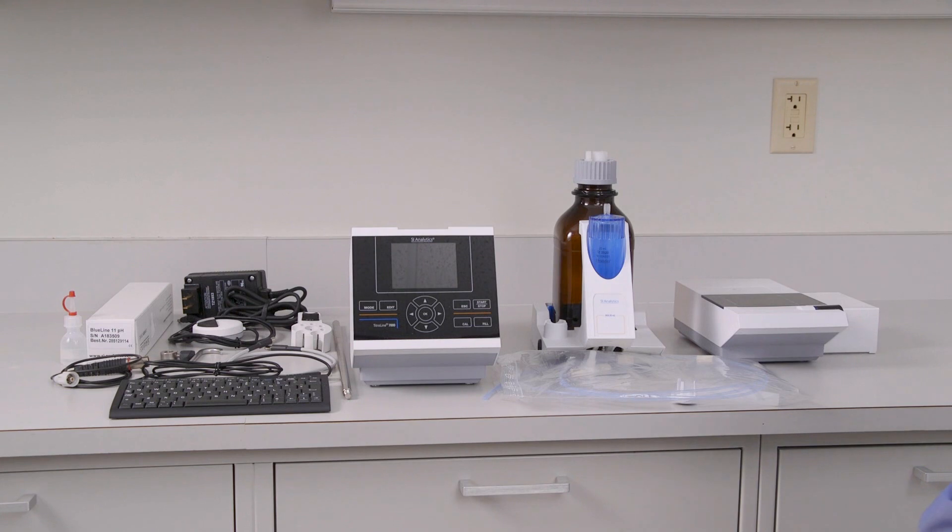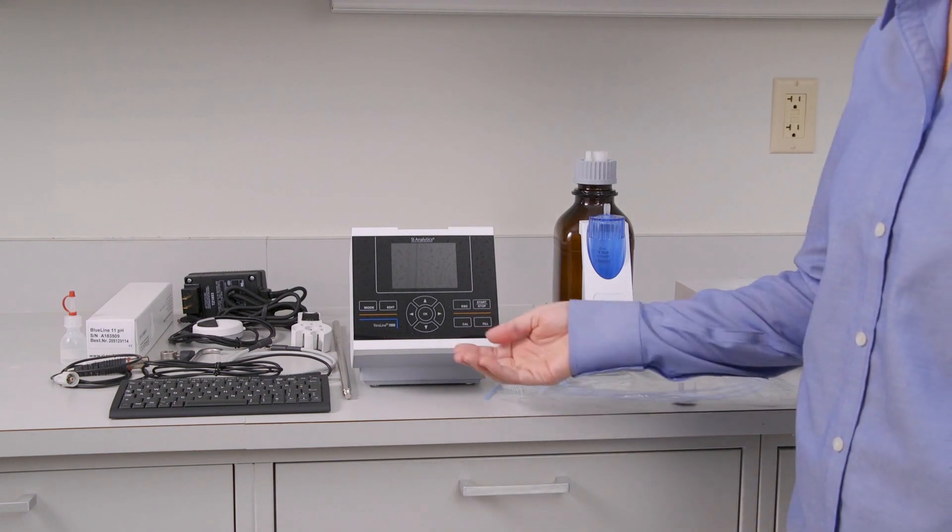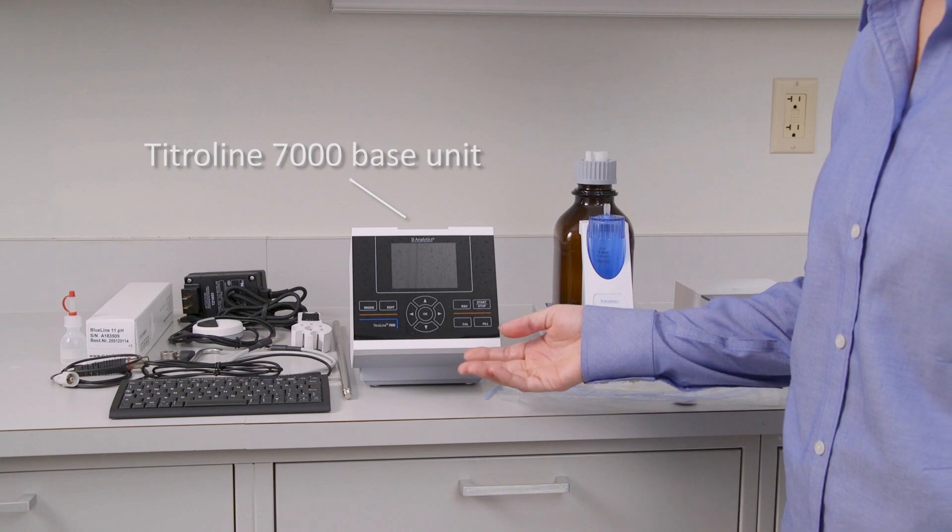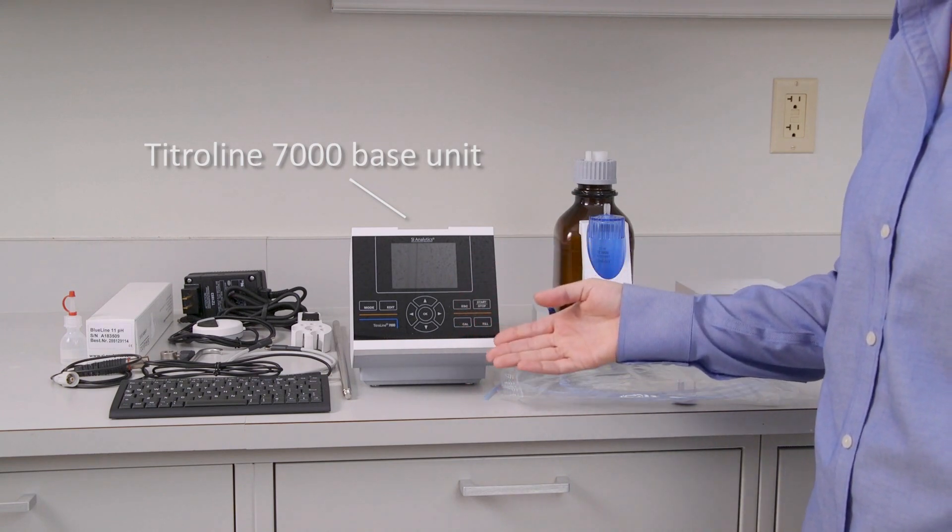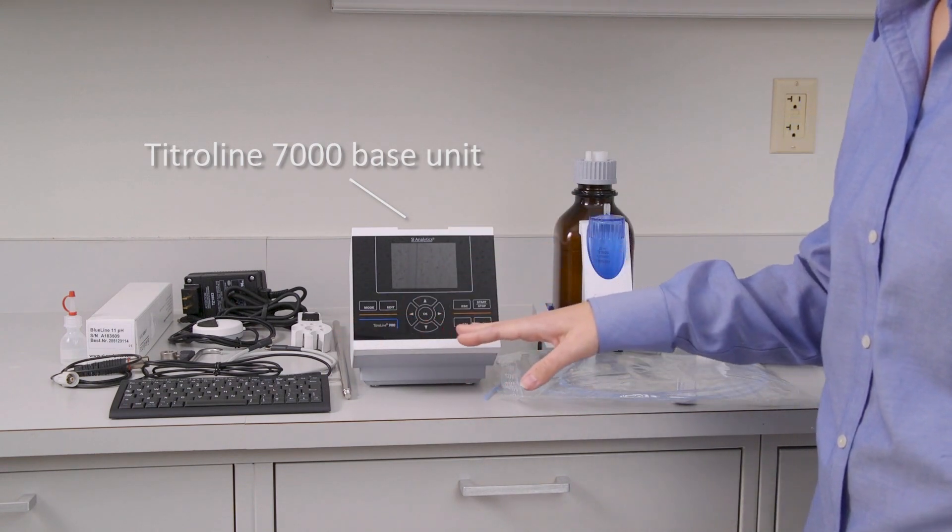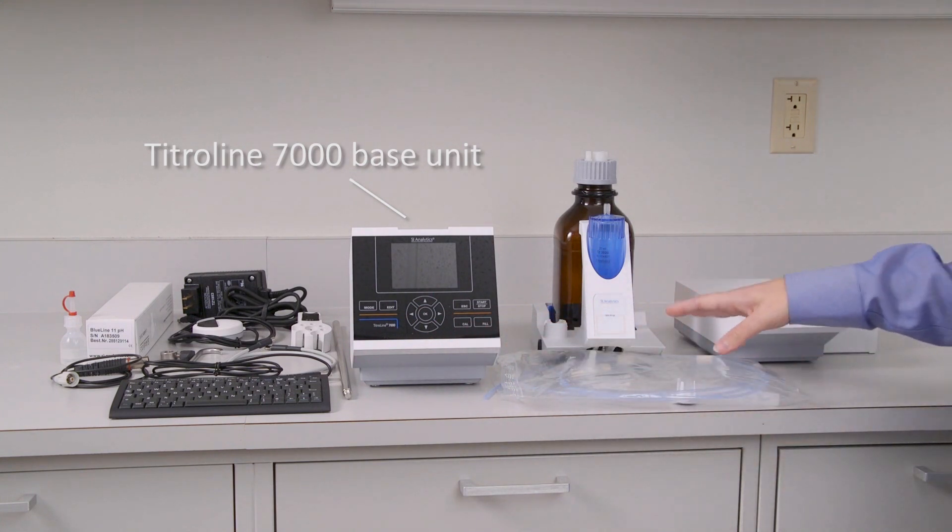We've got three main components of the system. The first one being the Titreline 7000 base unit. So this is essentially the brain of the system, and all of the accessories that you see here will come along with that.